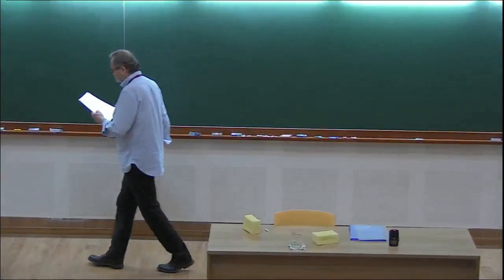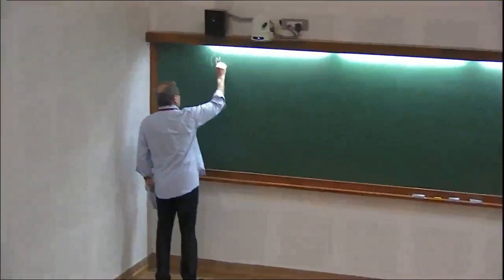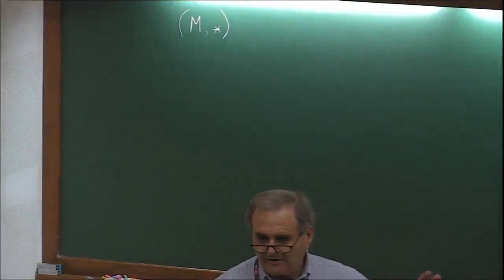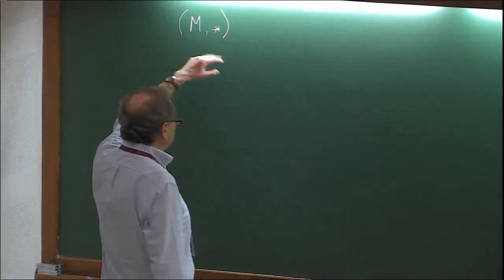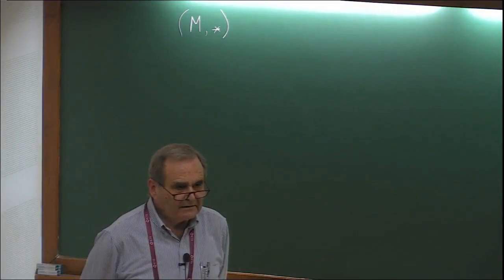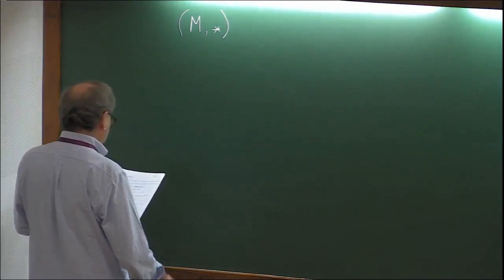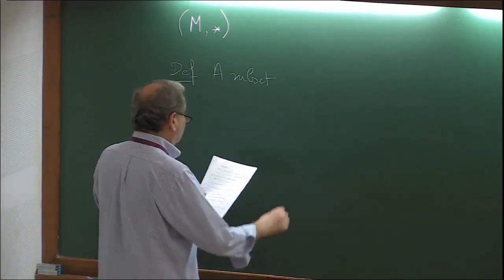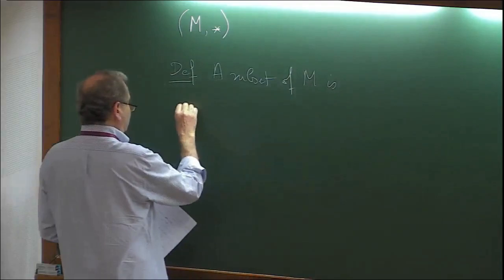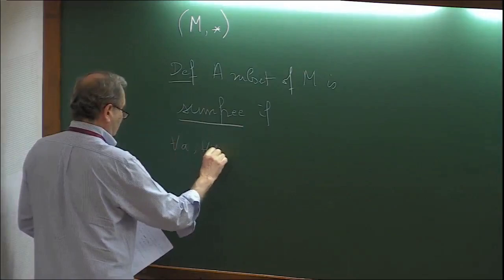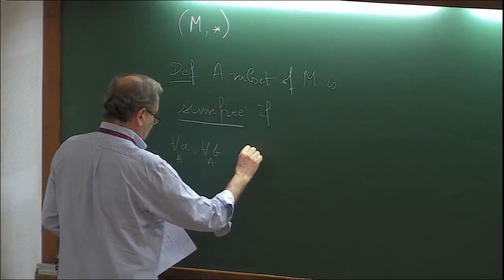If you have M with a given law as a monoid, then essentially you have some associative law. For what we are going to do, we are going to use only abelian laws. Essentially a non-empty set with this associative law — if it is not associative, you cannot do really much mathematics. If you have some subset A, this is just the introduction. Subset A, subset of M, is sum-free if each time you take A, B in A, then A star B does not belong to A.